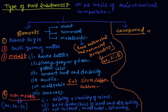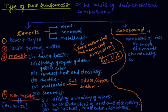Now let's discuss compounds. A compound is a substance composed of two or more elements chemically combined in a fixed proportion.